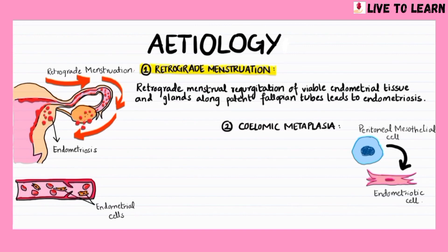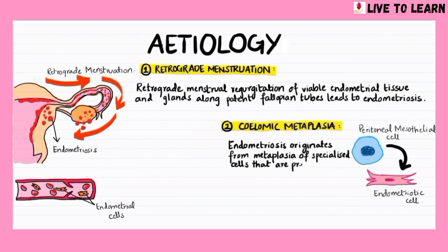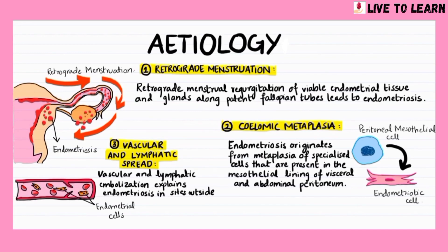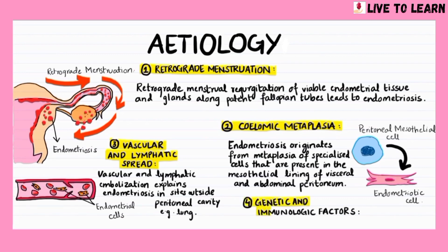The celomic metaplasia theory states that endometriosis originates from metaplasia of specialized cells that are present in the mesothelial lining of visceral and abdominal peritoneum. Vascular and lymphatic embolization has been demonstrated and explains endometriosis in sites outside the peritoneal cavity, such as the lung. It has been suggested that genetic and immunological factors may alter the susceptibility of a woman and allow her to develop endometriosis.